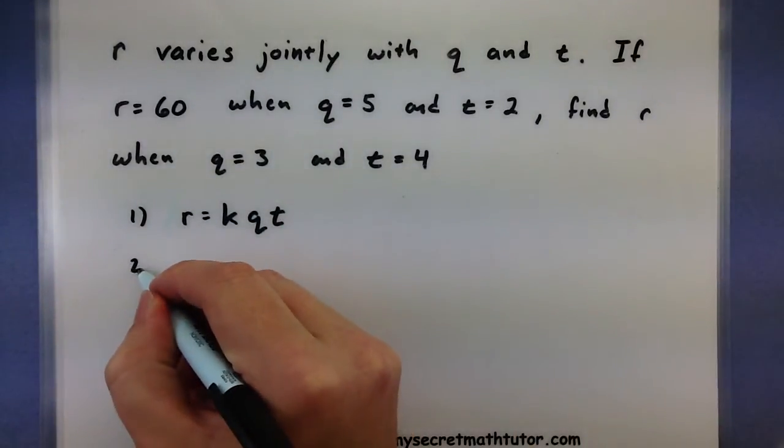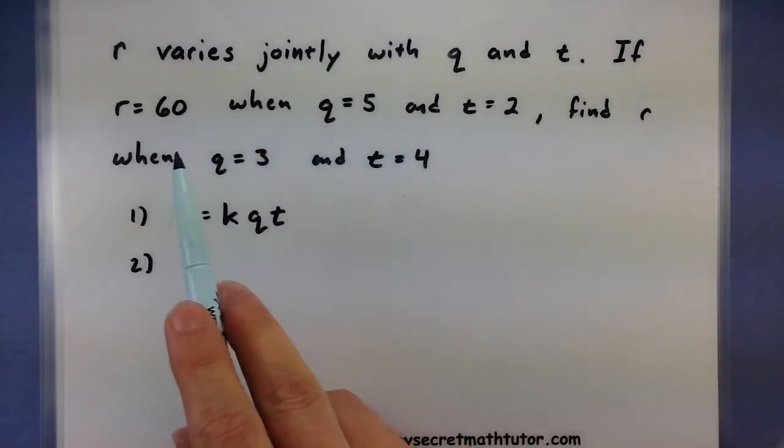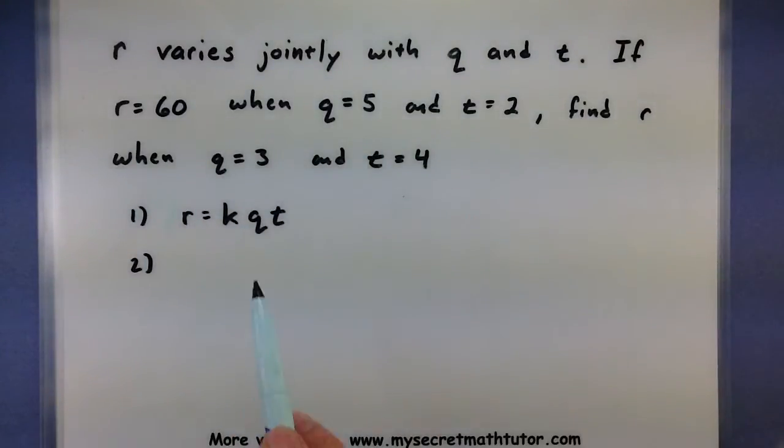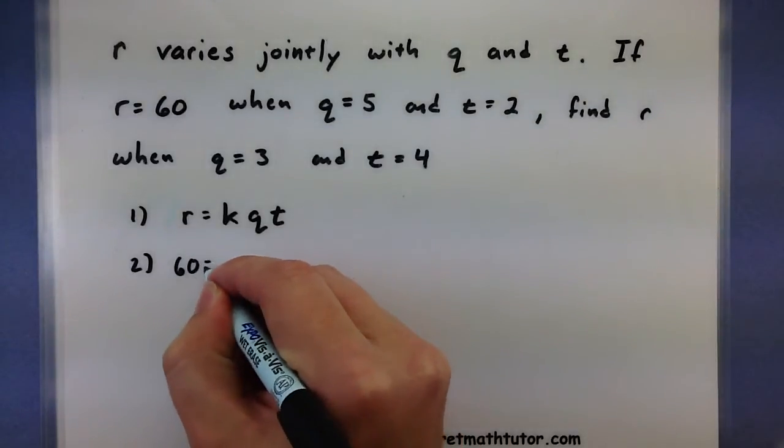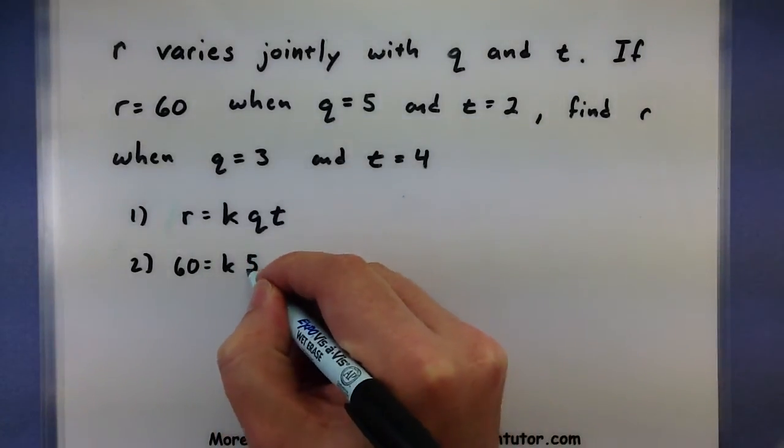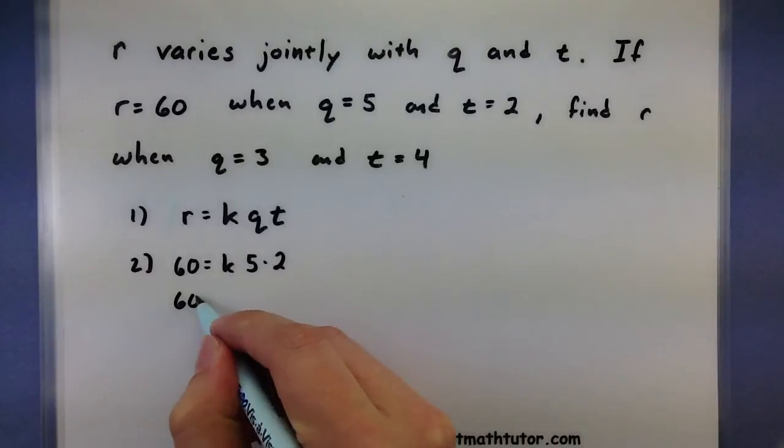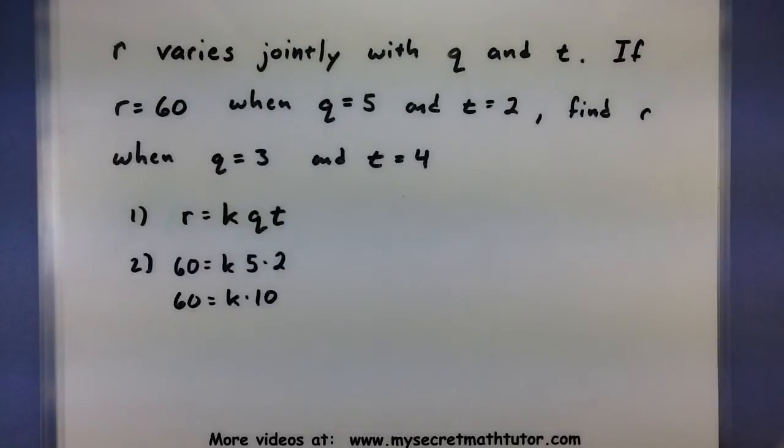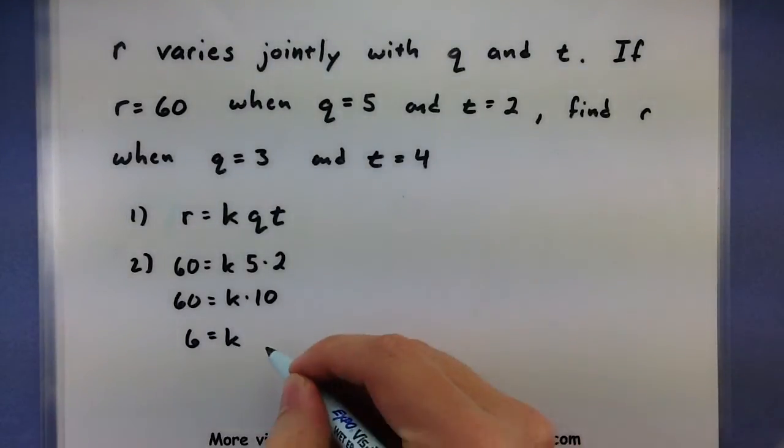Now for step two, we need to figure out what the k value is. If r is 60, q is 5, and t is 2, we can use all those bits of information to solve for k. So r equals 60, q equals 5, and t equals 2. The only thing I don't know is k. Let's multiply the 5 and 2 together, that's 10. Divide both sides by 10. I can see that k is equal to 6.